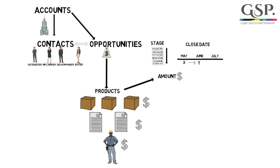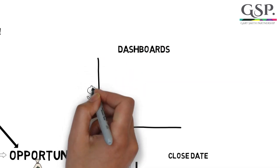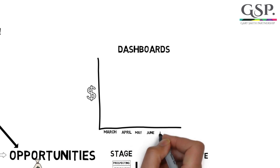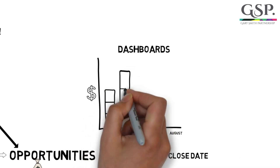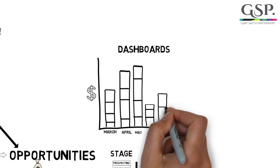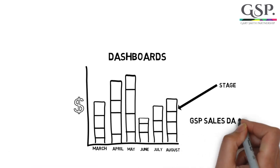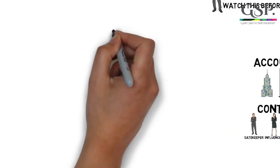Now that we have these three pieces of information — the stage, the close date and the amount — we can start to analyse the sales pipeline. Dashboard charts are a powerful way to do this. For example, using our three key pieces of information, we can understand the size of the pipeline due to close each month. And within each month, we can analyse the pipeline by stage. These charts, along with many others, give us visibility of the sales pipeline and sales performance. You can kick-start the use of dashboards in your business by installing the free GSP Sales Dashboard from the AppExchange.